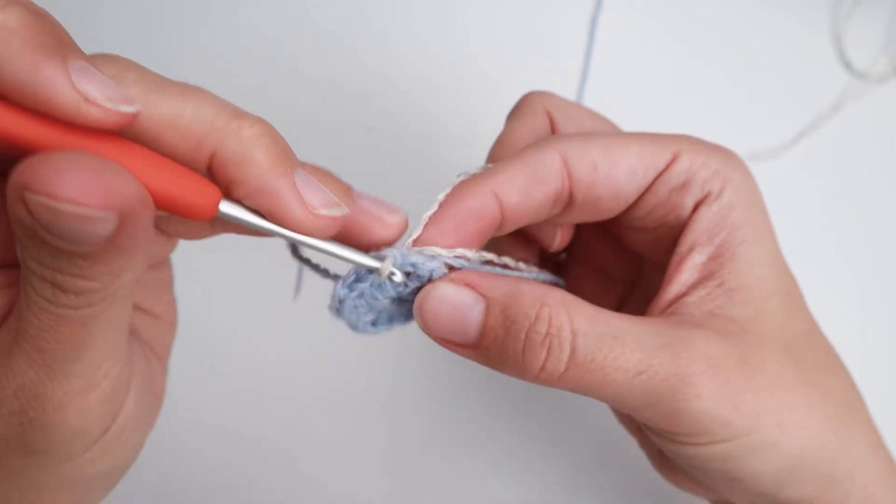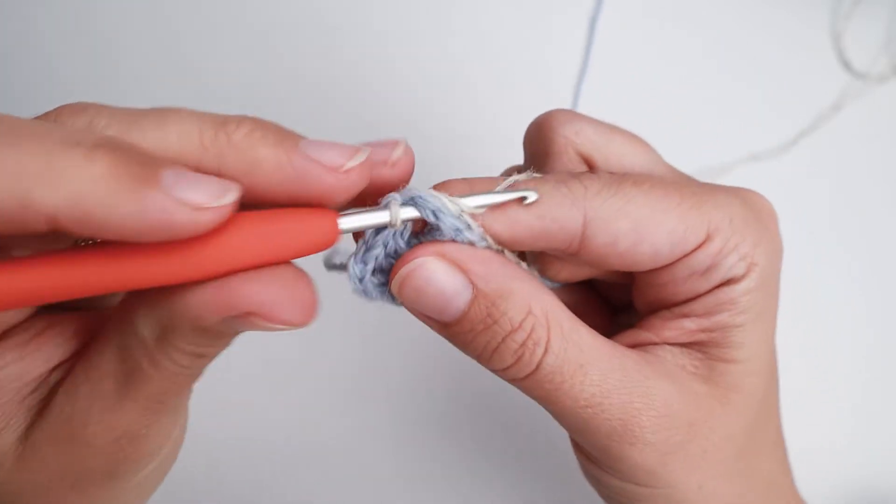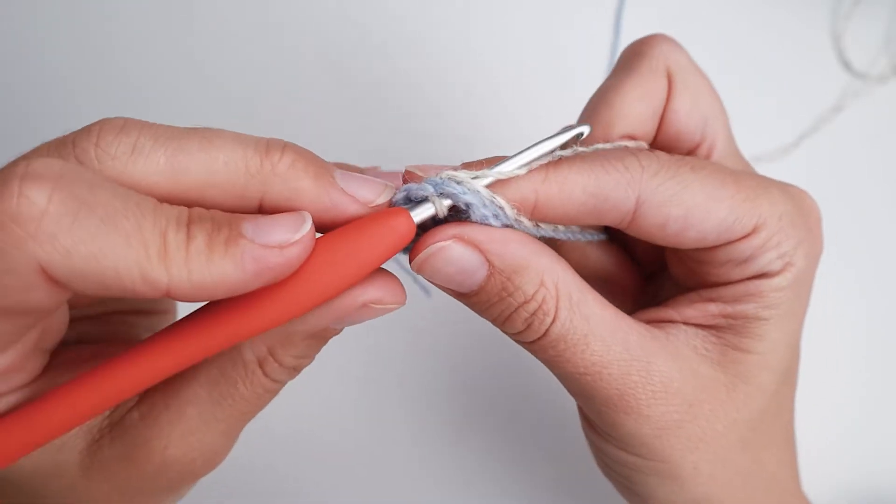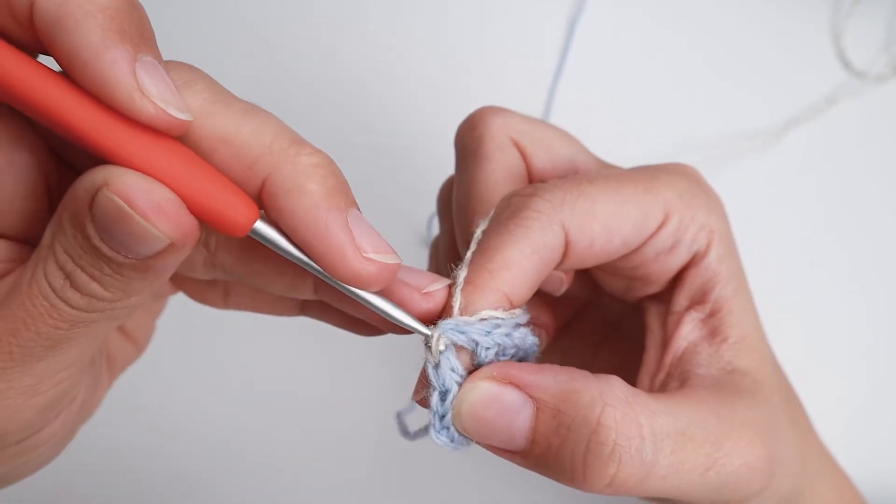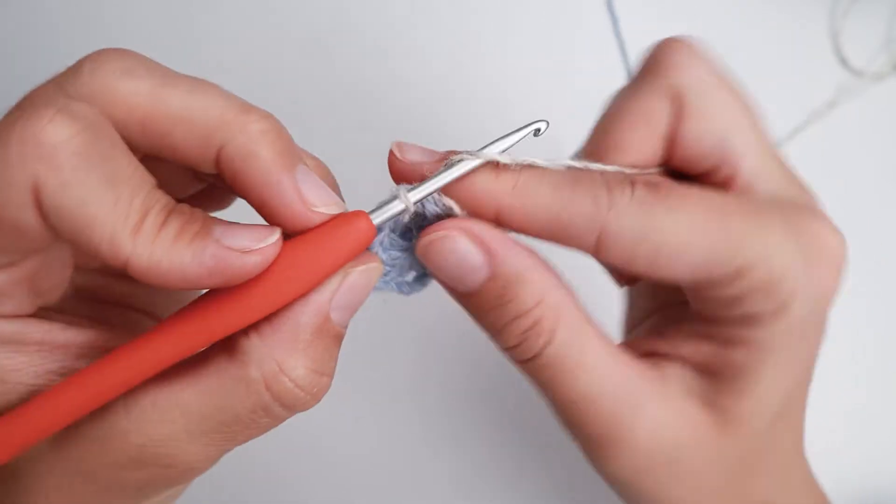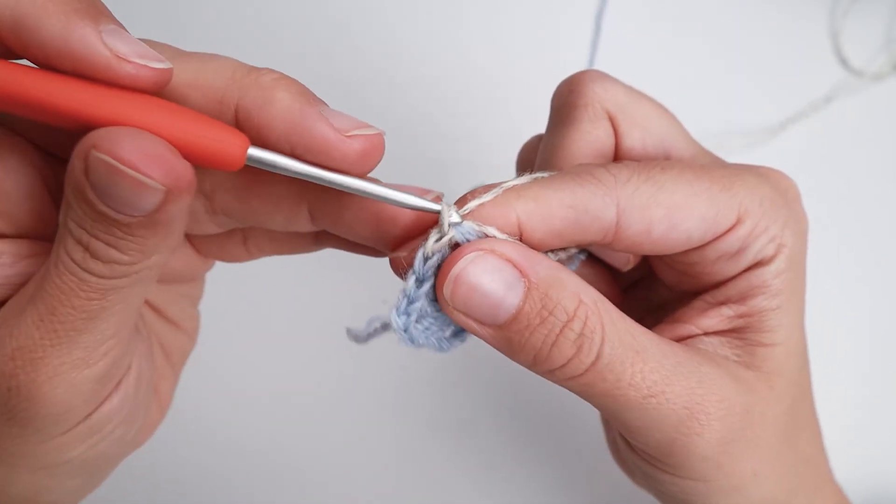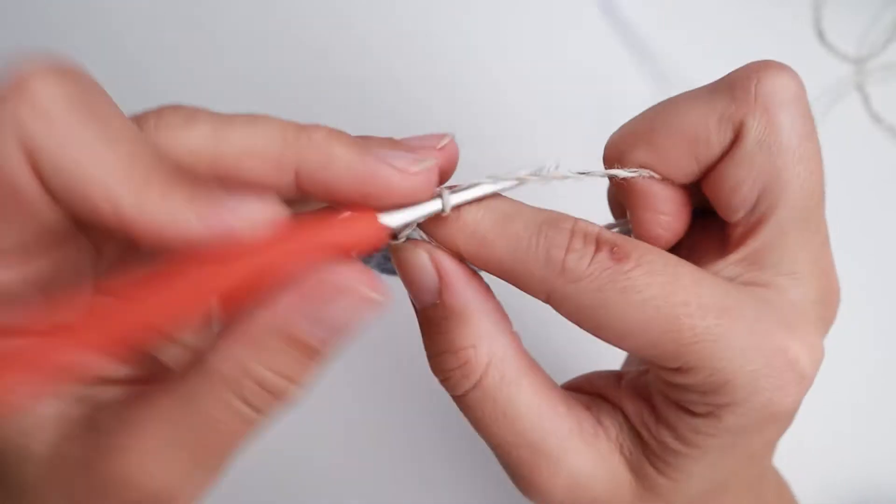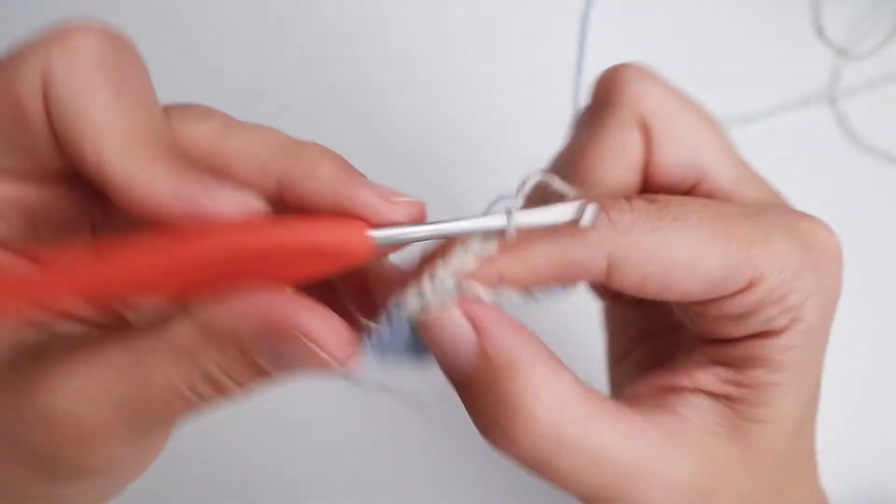So the pattern says to make your stitch, first stitch here, the slip stitch in the chain space, and then you make your six chain stitches here.